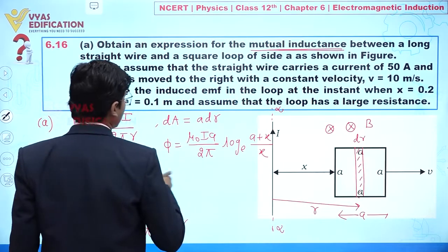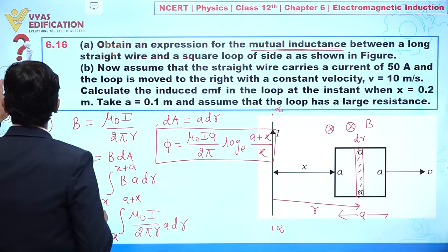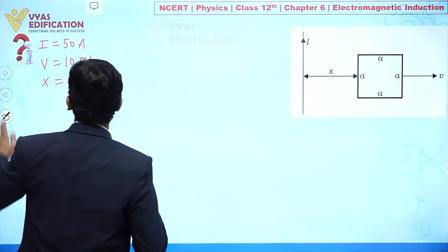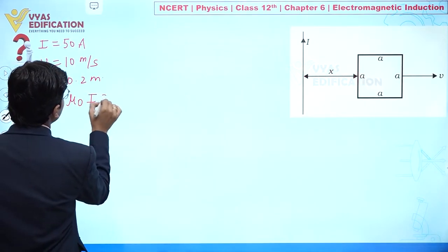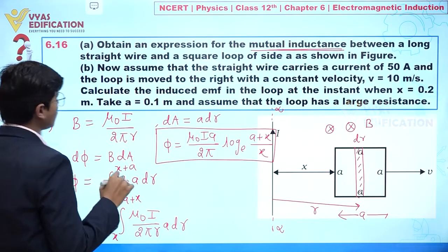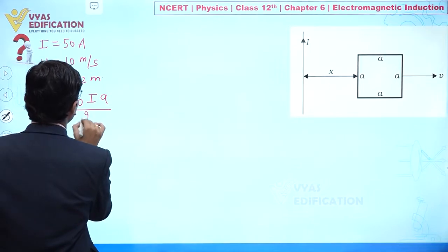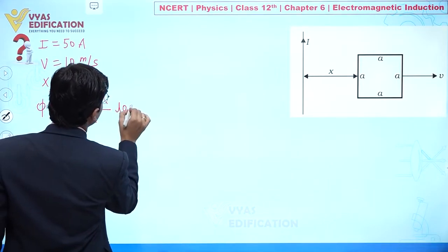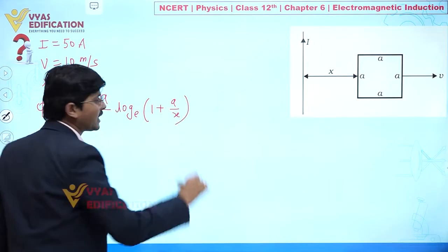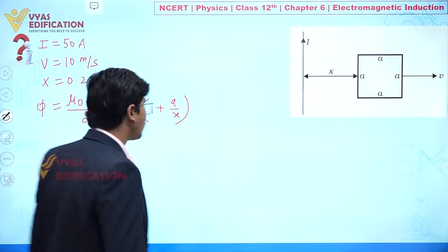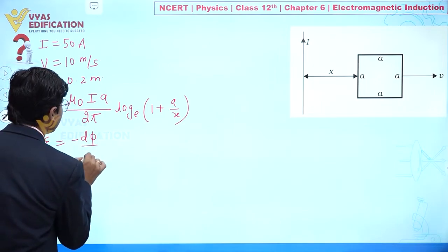We utilize the flux formula: φ = (μ₀Ia / 2π) · ln(1 + a/x). The induced EMF is given by ε = −dφ/dt.